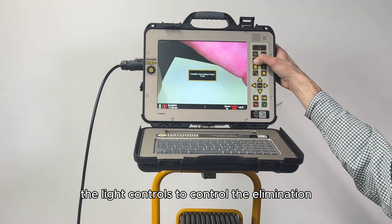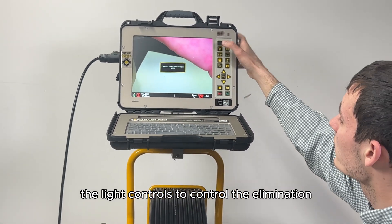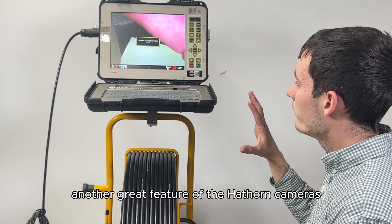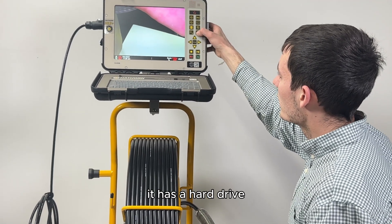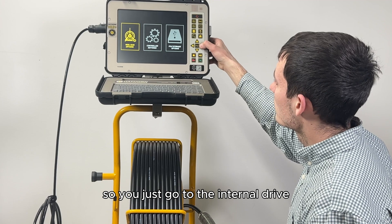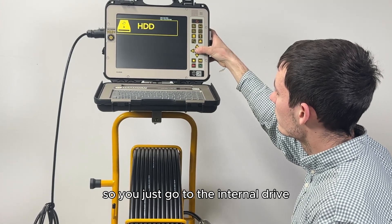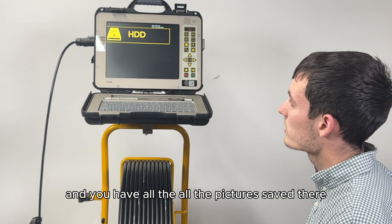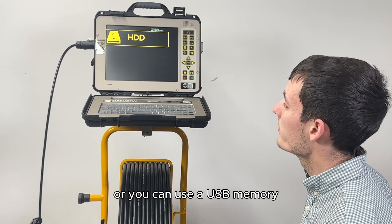And then lastly the light controls to control the illumination. Another great feature of the Hawthorne camera is it has a hard drive, so you just go to the internal drive and you have all the pictures saved there or you can use a USB memory.